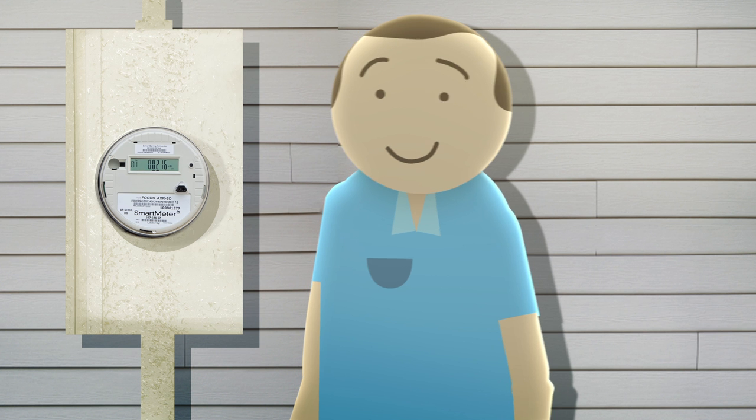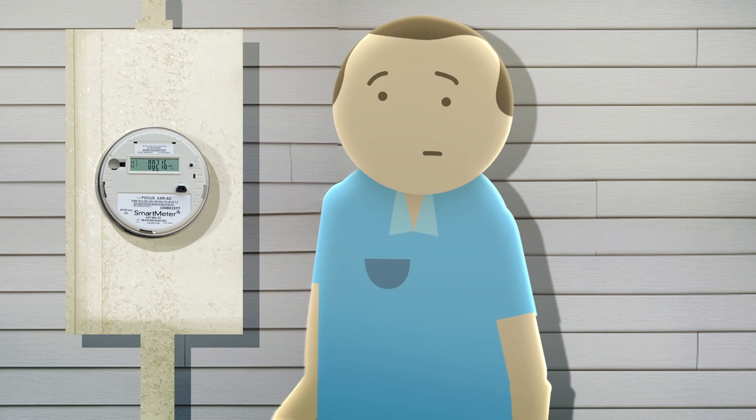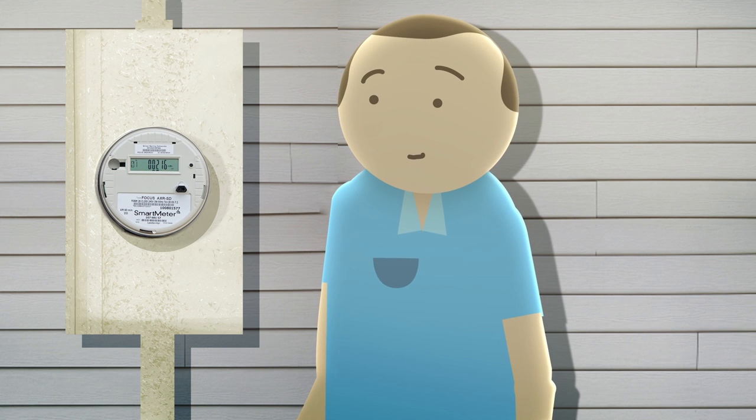Even if you cozied up to a smart meter all day, it would require you to snuggle next to one for 375 years before it would equal the exposure of having a daily 15-minute cell phone call over the course of one year.